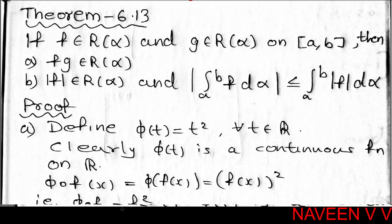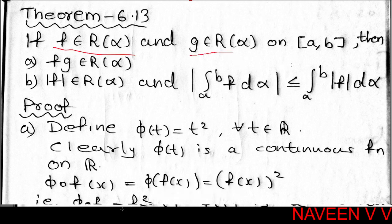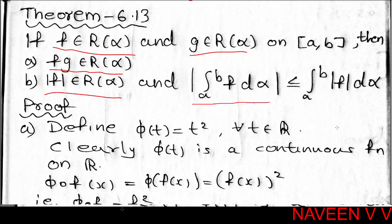Theorem 6.13: If f belongs to R(α) and g belongs to R(α) on closed interval [a,b], then first, f times g belongs to R(α); second, |f| belongs to R(α); and the modulus of the integral from a to b of f dα is less than or equal to the integral from a to b of |f| dα.